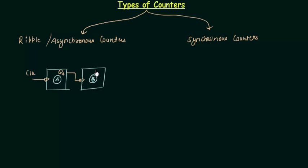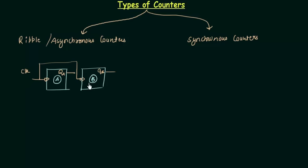Now we will see what to do in the case of synchronous counters. For synchronous counters, all the flip-flops receive the external clock pulse simultaneously. In the asynchronous case the clock is not given simultaneously to both flip-flops, but for synchronous counters the clock is given simultaneously. So if we have flip-flops A and B with outputs QA and QB, the same clock is given to both A and B at the same time. The only difference is regarding the clock.